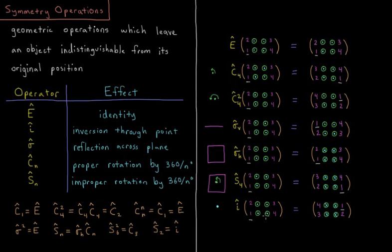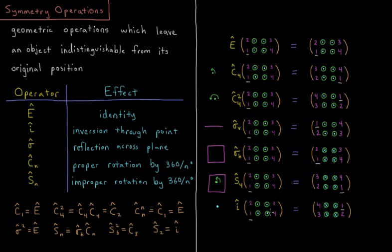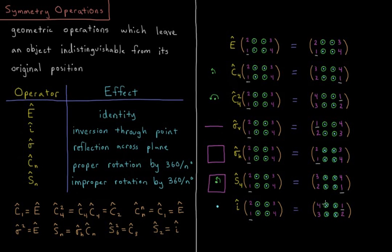Two goes to four and points the opposite direction, three goes to one, four goes to two, all pointing the opposite direction.